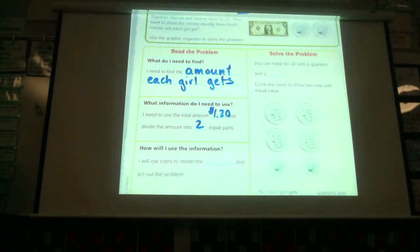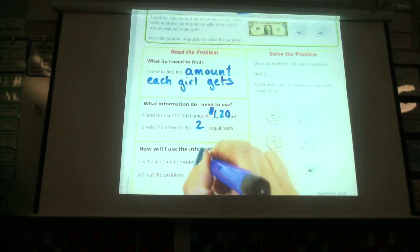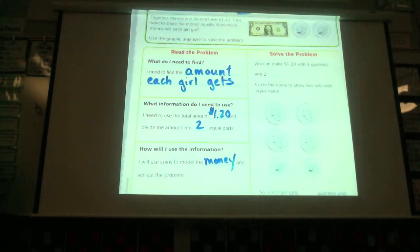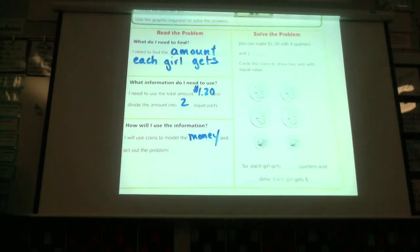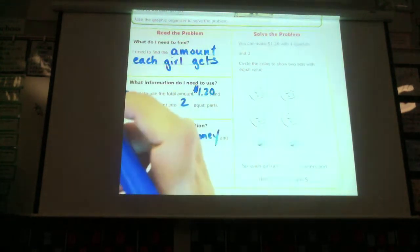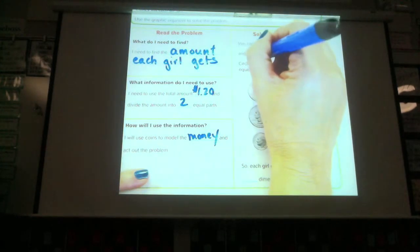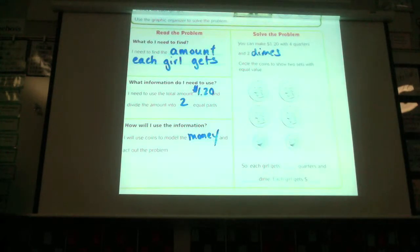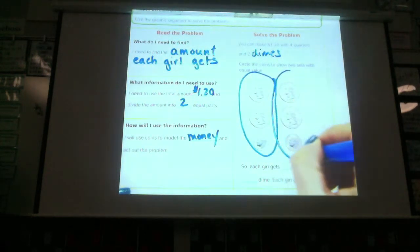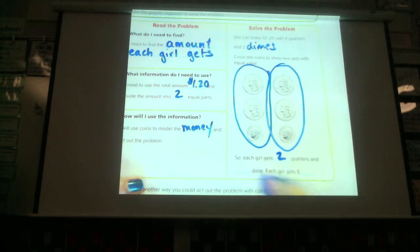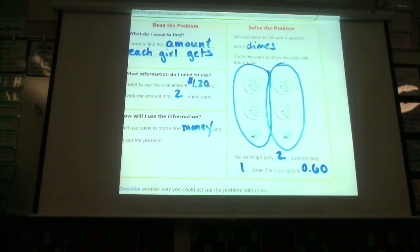To represent, who would like to tell me in words, what does the two represent? The two girls. There you go. All right, how will I use this information? I will use coins to model the money, is what we're doing here. Obviously, you didn't do it this way on your whiteboards because you don't have any money. I mean, you might have money, but you don't have any cash right now. So, let's do this modeling with money. You can make $1.20 with four quarters and two, what, Ethan? Dimes. Dimes. I'm asking Ethan because this is how his group did it. They did the actual coins. They split it up. Circle the coins to show the two values, the two sets. So, we had, if we go by Ethan's, this is exactly what their group did. So, each girl gets two quarters and one dime, which equals $0.60. Okay?